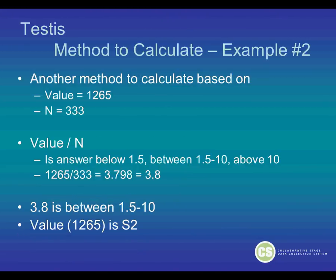The other way to calculate these same numbers, with a value of 1265 and N equals 333: take the value divided by N. Then determine if the answer is below 1.5, between 1.5 to 10, or above 10. So 1,265 divided by 333 equals 3.798, which you can round to 3.8. Since 3.8 is between 1.5 and 10, the value of 1265 is S2.